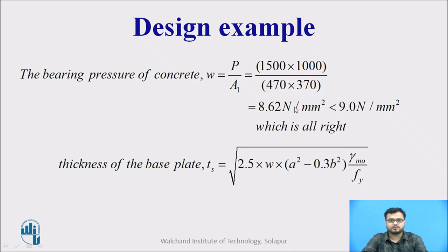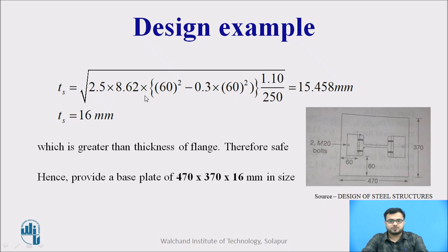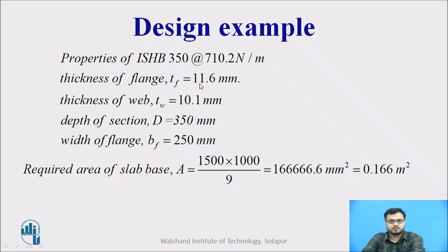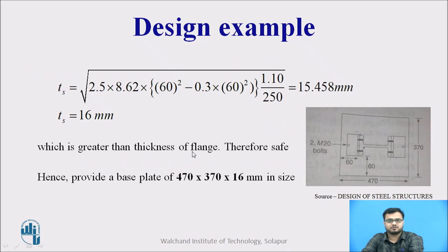To find the thickness ts, we use: ts = √(2.5 × w × (a² − 0.3b²) × γm0 / fy), where w is the bearing pressure (8.62), 'a' is the smaller projection, 'b' is the longer projection. Since both projections are equal at 60 mm, with γm0 = 1.1 and fy = 250, the thickness comes out to be 15.458 mm. We provide it as 16 mm, which is also greater than the flange thickness of 11.6 mm for ISHB 350 — therefore safe.